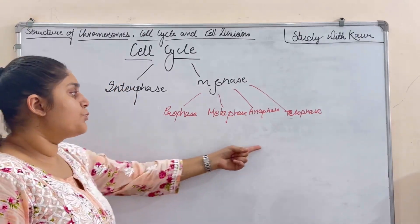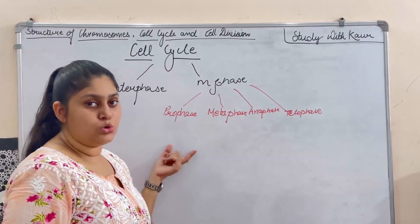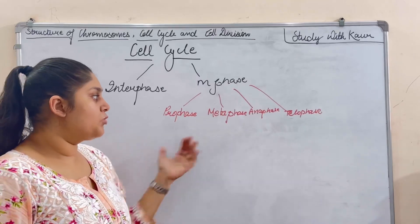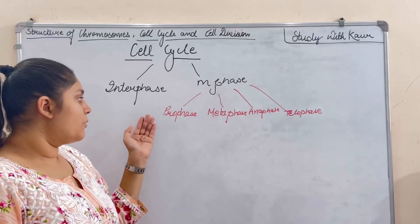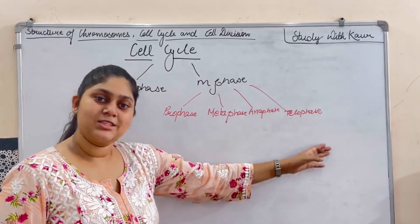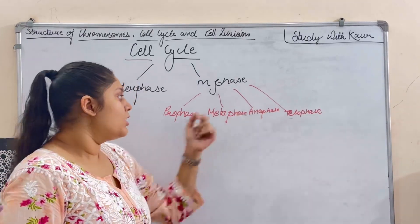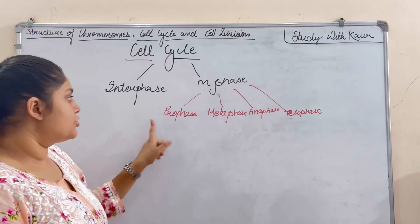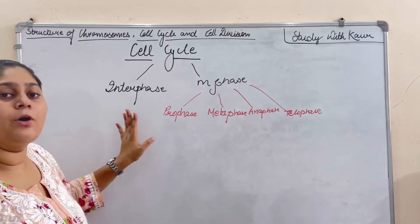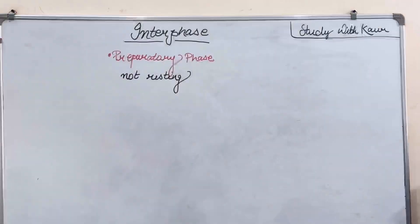These four sub-phases of M phase are prophase, metaphase, anaphase, and telophase. These also come in arrangement questions — you have to arrange them in order: prophase, metaphase, anaphase, and telophase. Now let's talk about the interphase.